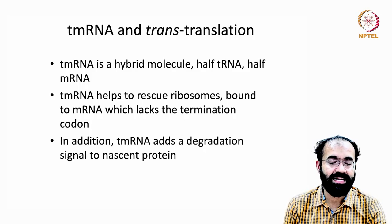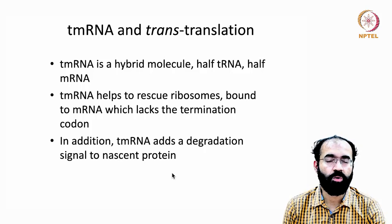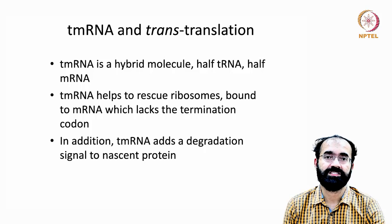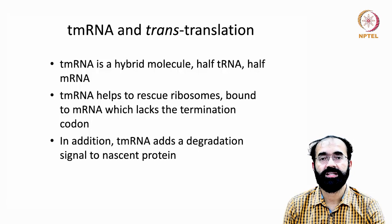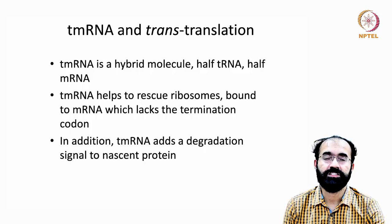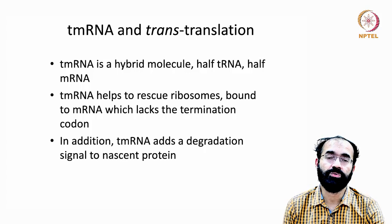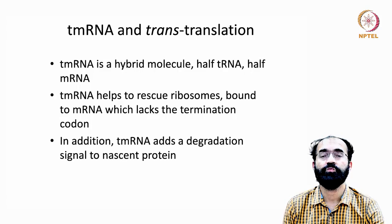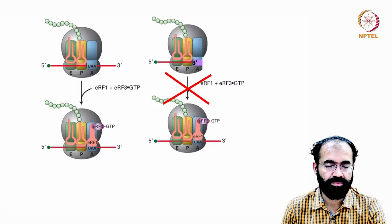In addition, tmRNA adds a degradation signal to the nascent protein. If the stop codon was not present, the product made may not be useful. The tmRNA has a few codons that add amino acids onto this unwanted protein. If this protein were to remain and perform some undesirable function, it would cause trouble for the cell. So tmRNA not only rescues the ribosome and detaches it from the mRNA, but also causes the degradation of the aberrant protein.